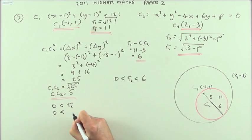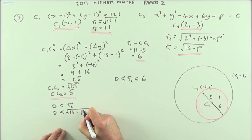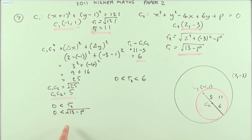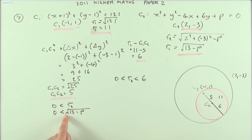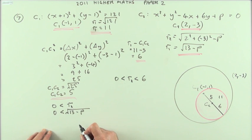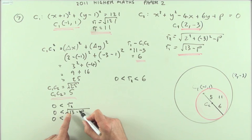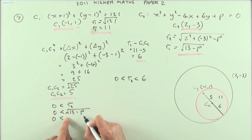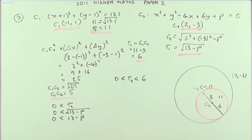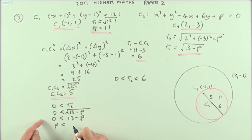Zero must be less than √(13 − p). Squaring both sides — since squaring keeps everything positive, the inequality is maintained — gives 0 < 13 − p. Bringing the p over: p has to be less than 13. That's one part of the answer.